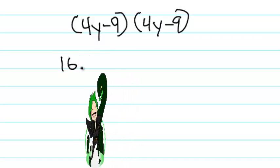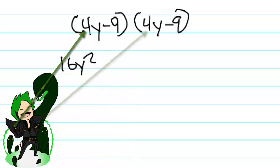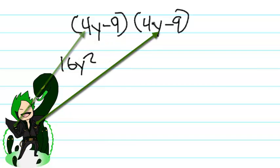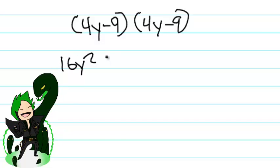And a y multiplied by a y would make it y squared. Now we take 4y and multiply it by negative 9. 4y multiplied by negative 9 is negative 36y.